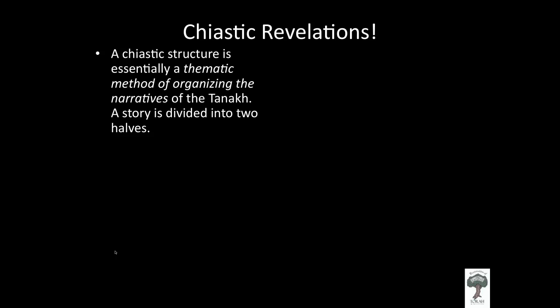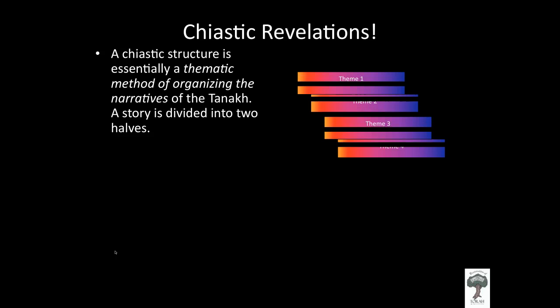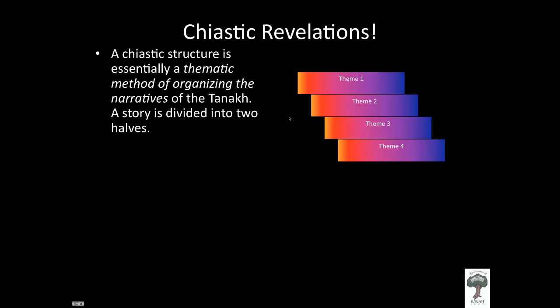A chiastic structure is essentially a thematic method of organizing the narratives of the Tanakh and also the New Testament. A story is typically divided into two halves, and in the first half you may have certain themes developed — let's say theme one, theme two, theme three, and theme four.